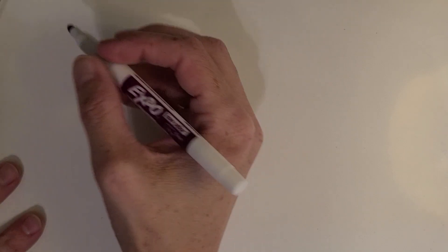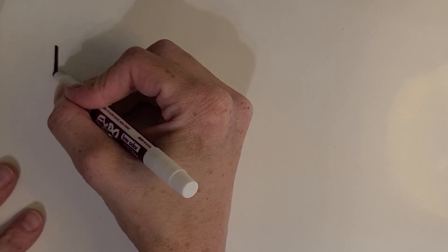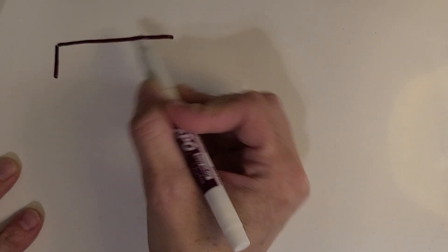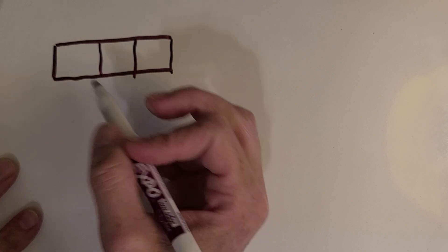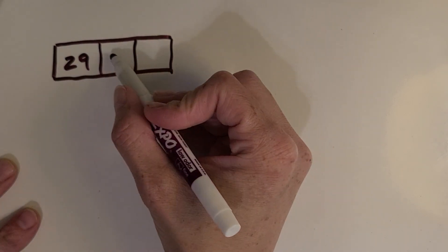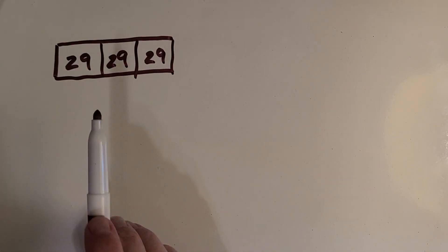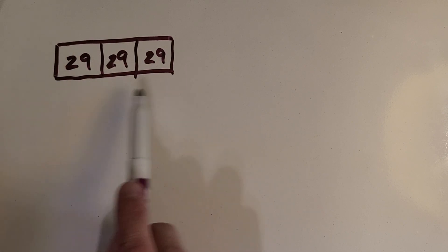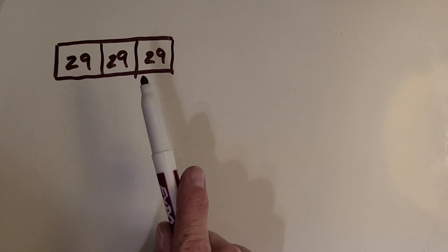To get started on this problem, I'm gonna start by making a strip diagram. It mentioned that I filled up three times, and each time was $29, so three groups of $29. I'm gonna put 29 in each of these. The thing I love about strip diagrams is it really helps us wrap our brain around what we're supposed to do in the problem. This picture helps me see that I've got three groups of 29, so that will help me out later when I start calculating.